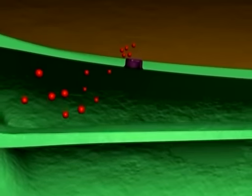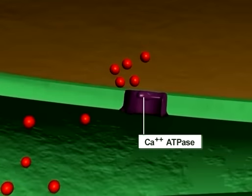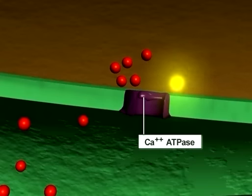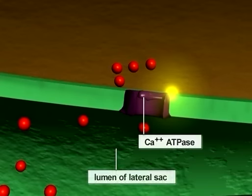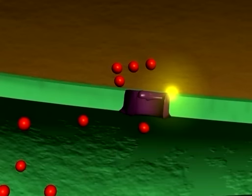To end the contraction, calcium must be actively transferred by the calcium pump, calcium ATPase, back into the lumen of the lateral sacs. This pump utilizes ATP as a source of energy.